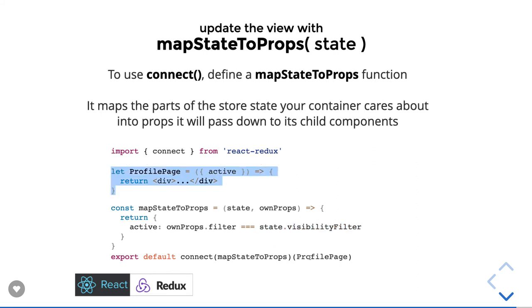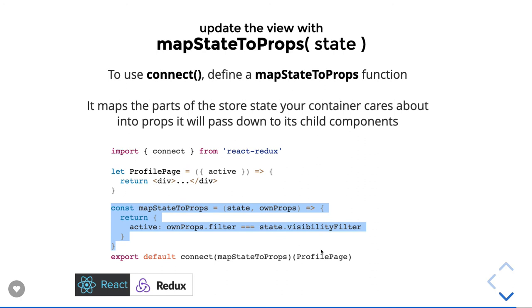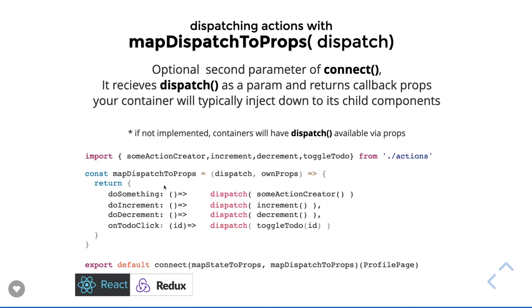The component can access these props because it is passed as the second argument to connect. Whatever mapStateToProps returns gets exposed to props, so ProfilePage accesses props.active from there. Similarly, mapDispatchToProps helps dispatch actions to the Redux store from the React component. Methods like doSomething, doIncrement, doDecrement, onTodoClick are all available in the ProfilePage component via props, allowing both state access and action dispatching.